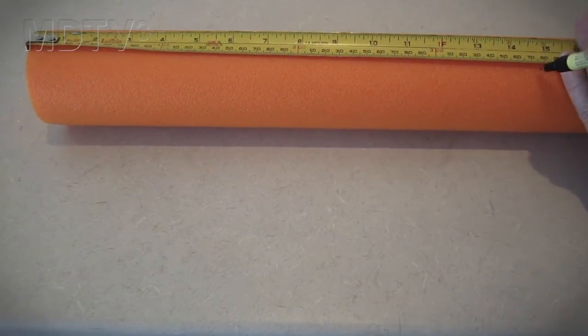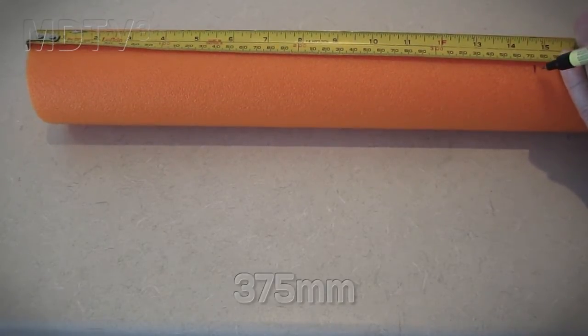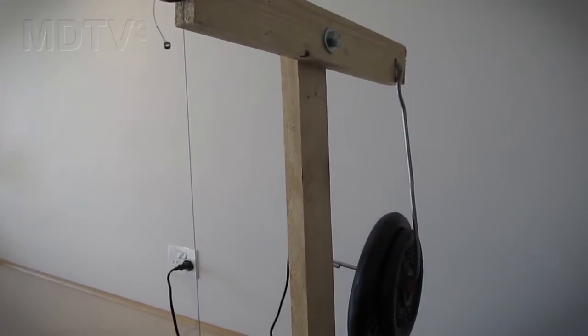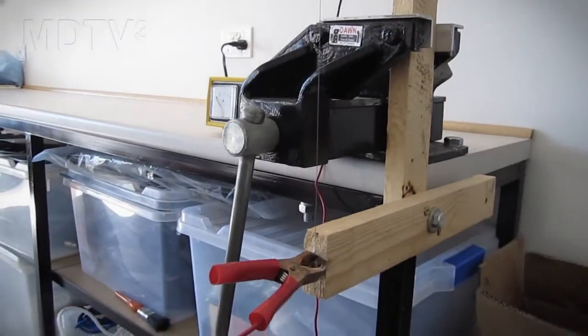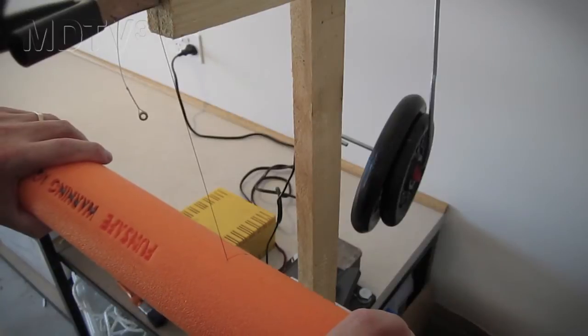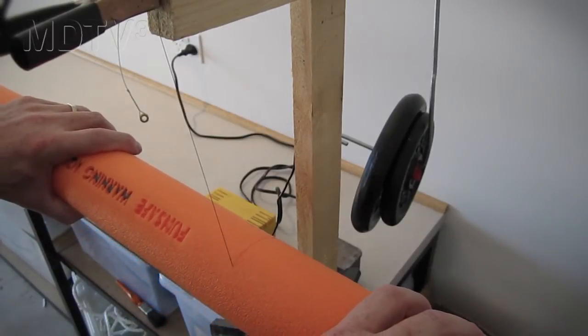Measure out four equal sections 375 millimeters long. We'll be using a simple hot wire where the current from a battery charger is passed through a guitar string. Cut the sections using an electric carving knife, a razor blade, or a hot wire as shown here.